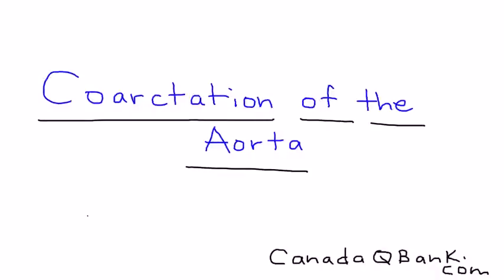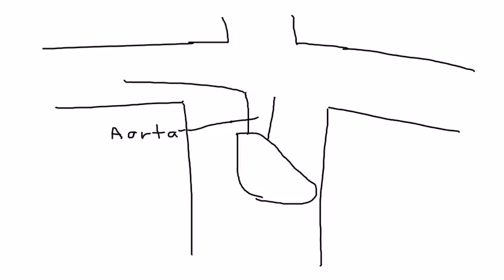Coarctation of the aorta is the topic and I'll start by drawing a very basic diagram of this anatomy. Here you have a person with arms and neck, here's the heart, and coming out from the heart is a large blood vessel that we know as the aorta. I'll draw some branches, one's going to one arm, one branch is going to another arm.